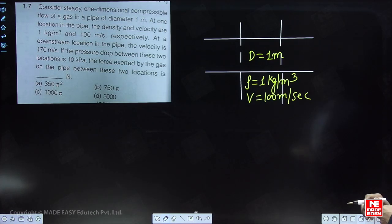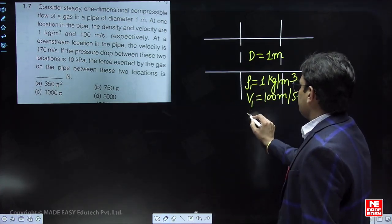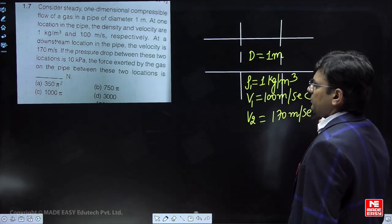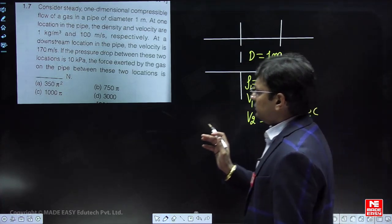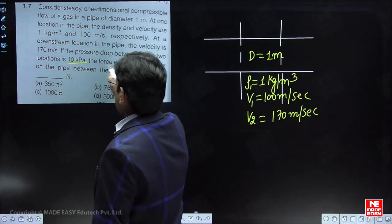At a downstream location in the pipe, the velocity is 170 meters per second. If the pressure drop between these two locations is 10 kilo Pascal, find the force exerted by the gas on the pipe between these two locations.